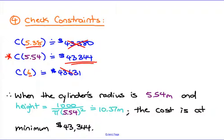Checking our constraints on our radius, which was 5.38 and also the 6, it does still look like this guy is the smallest cost - these ones are bigger. So that means that the best radius is going to be 5.54 meters, and the best height, we take our 5.54, sub it back into our height equation and solve. The best height looks like it's about 10.37 meters in order to minimize the cost at $43,344.